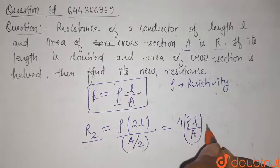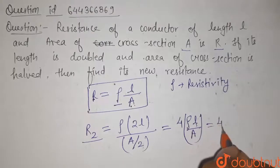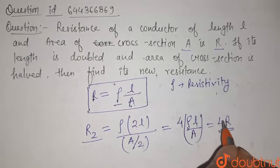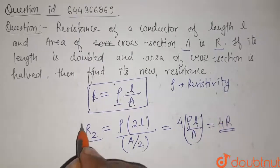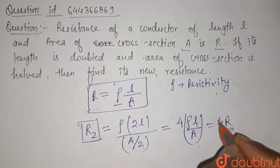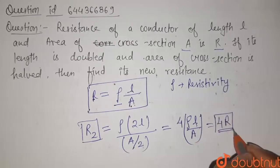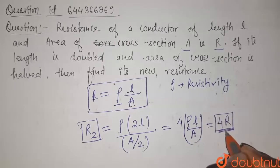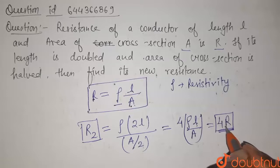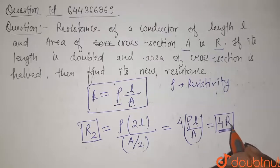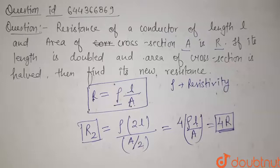So let us substitute that here. It will become 4 times of R. So the value of new resistance R2 will be equal to 4 times the previous resistance. That is, the resistance becomes 4 times the initial resistance. That's our solution for this question. Thank you.